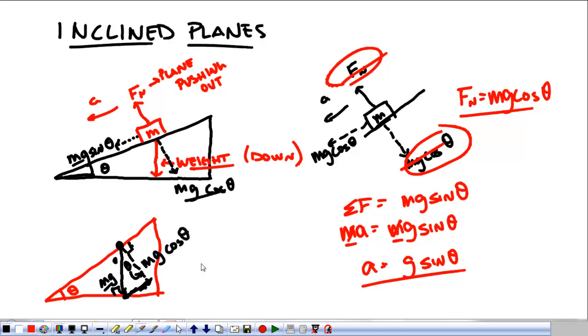And this is the opposite side. So we're going to have Mg times the sine of theta. Because it's the opposite side. This is where we're getting Mg sine theta pulls down the plane and Mg cosine theta pulls into the plane.